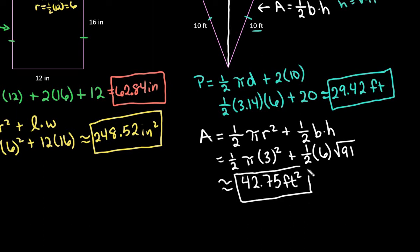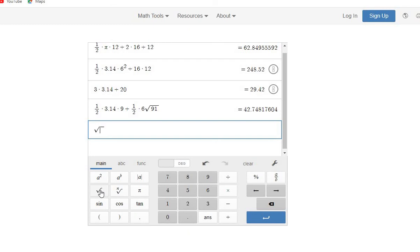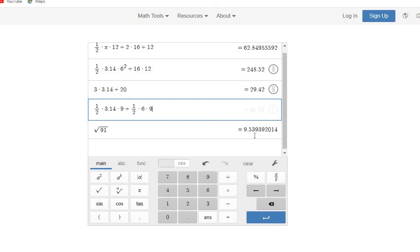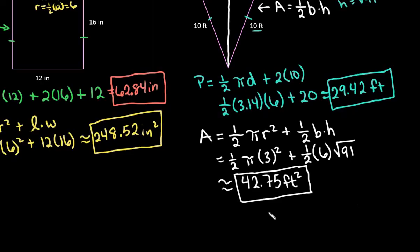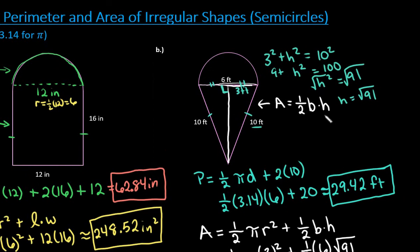The area is approximately 42.75 square feet. If you're running into the wrong answer, try finding the square root of 91 first — it's about 9.54. The more rounding you do before your final calculation, the less accurate your answer will be. This figure requires extra thinking because it involves an isosceles triangle and the height isn't given directly. As always, thanks for watching — if you have questions or want additional topics covered, please let me know.